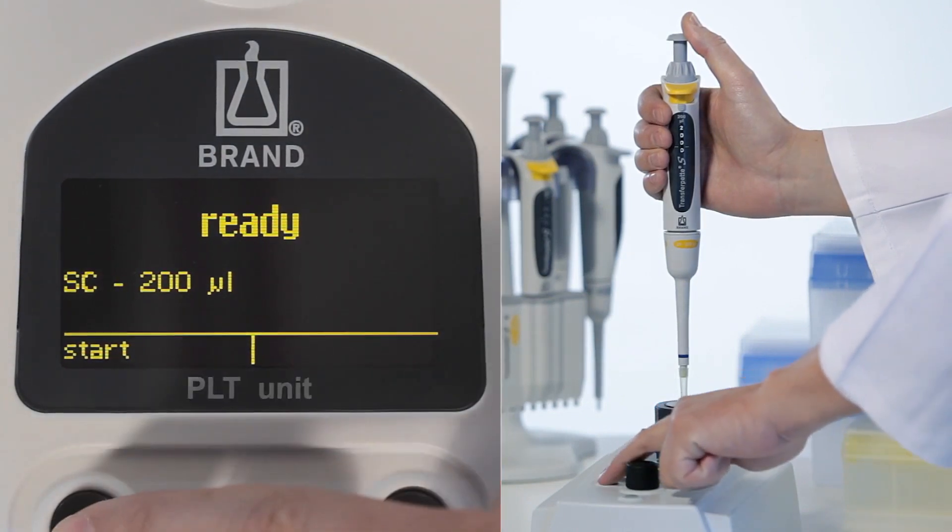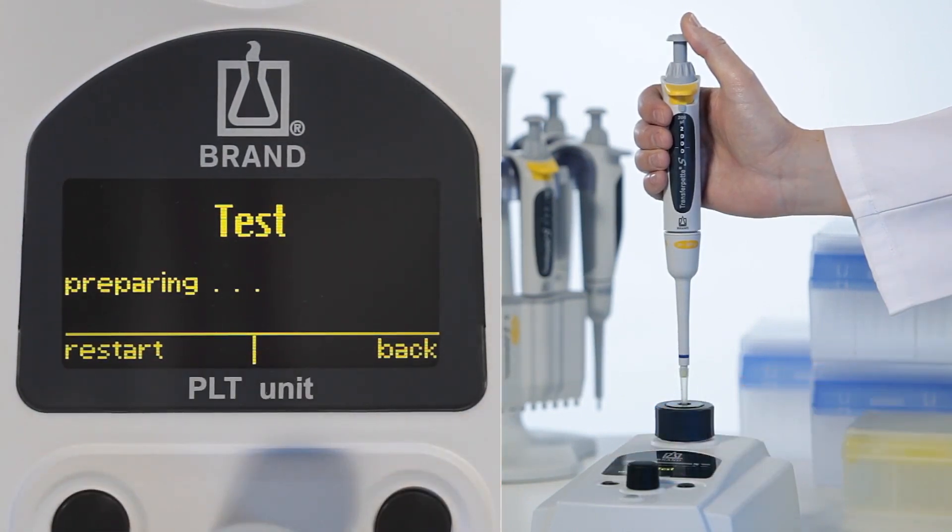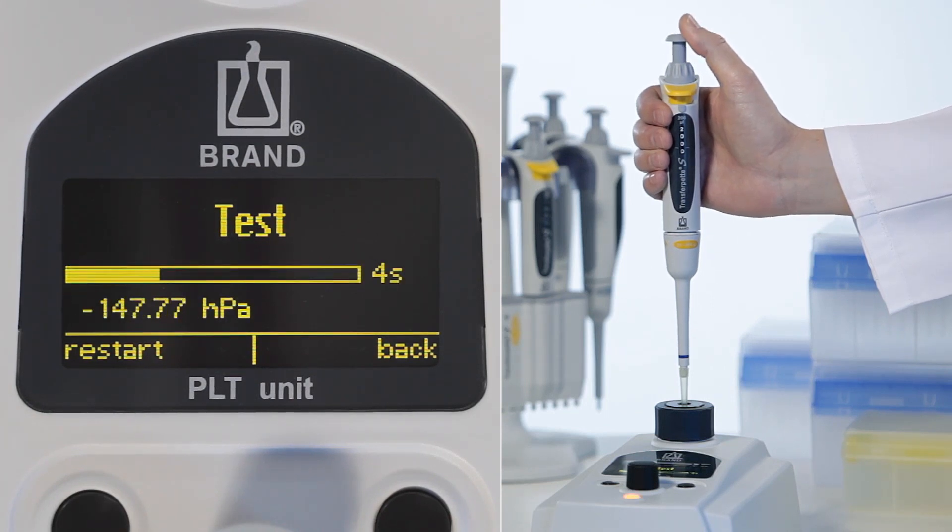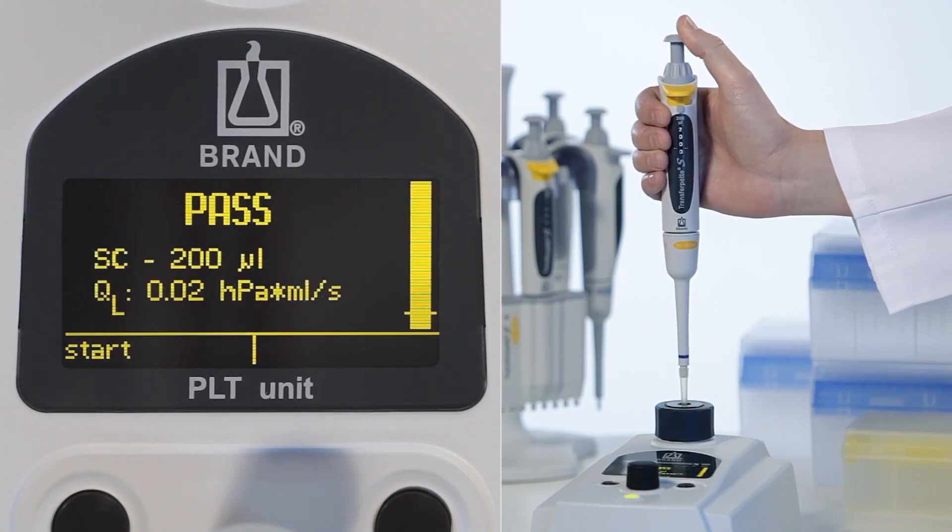We now test a pipette with a tip attached and press down the pipetting button several times during the measuring phase to detect possible problems with the piston. Testing shows that the pipetting system is leak-tight.